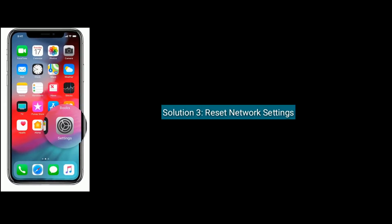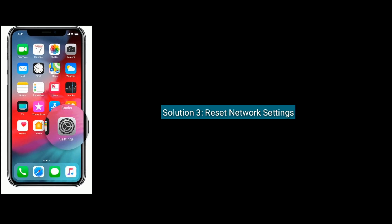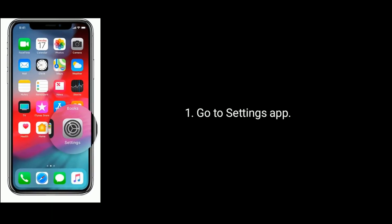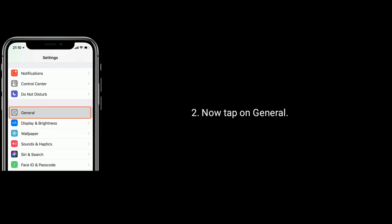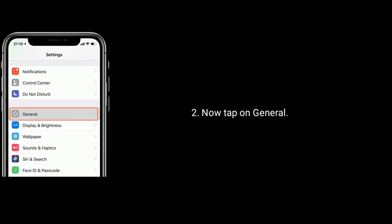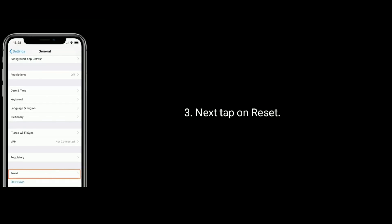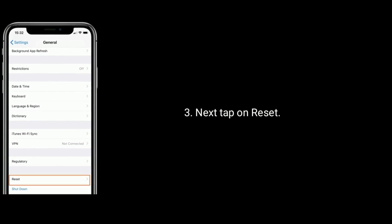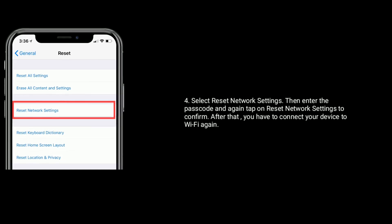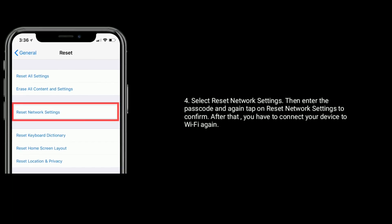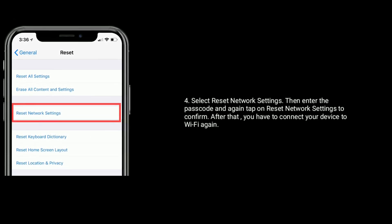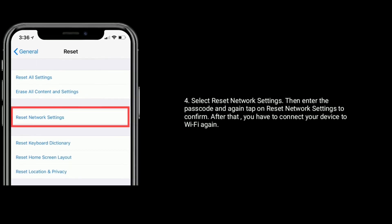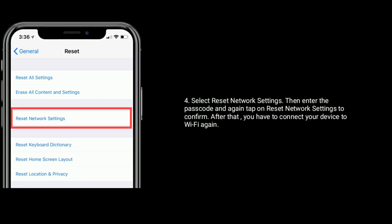Solution 3 is reset network settings. Go to the Settings app, tap on General, then tap on Reset, and select Reset Network Settings. Enter your passcode and tap Reset Network Settings again to confirm. After that, you will need to connect your device to Wi-Fi again.